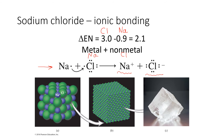Since sodium lost an electron, it now has one more proton in its nucleus than electrons in its cloud, giving it a +1 charge. Since chlorine picked up an extra electron, it now has one more electron than protons, giving it a negative charge. Sodium chloride doesn't stop with a single sodium ion and a chloride ion. This illustration shows a relatively small number of sodium and chlorine ions clustered together, but the crystal keeps growing — adding more and more sodiums and chlorides, always maintaining a one-to-one relationship — until you end up with a large crystal of salt.